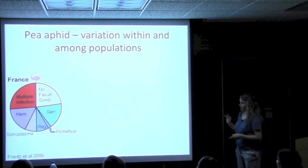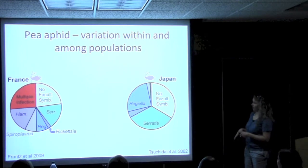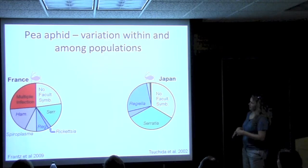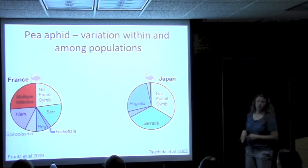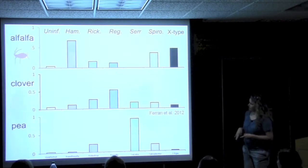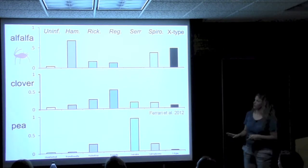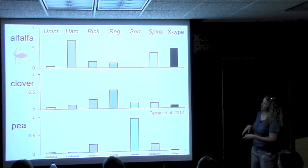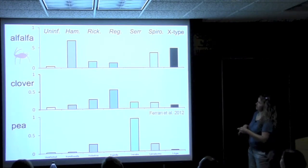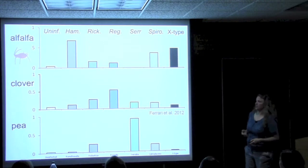A different study by Tsuchida et al. from Japan found a very different pattern: about a third had no symbiont, a third had Serratia, most of the remaining third had Regiella, with essentially no multiple infection. A third study by Ferrari et al. showed variation among host plants — the symbiont profile was very different across different host plants. Aphids off alfalfa had a lot of Hamiltonella but no Serratia; on pea, essentially the reverse; clover fell in the middle with Regiella potentially allowing specialization on clover being most common.